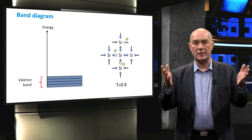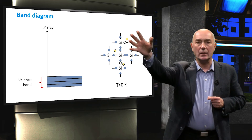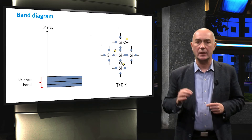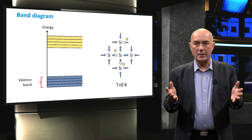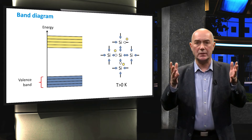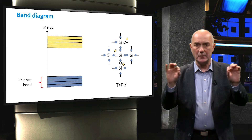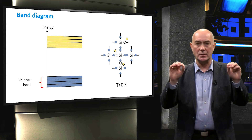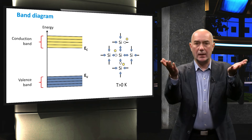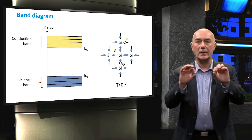When a valence electron receives additional energy, either from a photon or through thermal vibrations, it can become mobile. Having absorbed additional energy, these mobile electrons are at a higher energy level than the bound valence electrons. The band of allowed energy states for these conduction electrons is known as the conduction band and is indicated by the yellow area. The lowest allowed energy level of the conduction band is known as the conduction band edge, indicated by EC. The highest allowed energy level of the bound valence electrons is known as the valence band edge, indicated by EV.